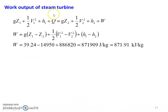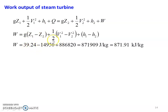Work output from the steam turbine using the steady flow energy equation: g·Z1 plus 1/2·V1² plus H1 plus Q equals g·Z2 plus 1/2·V2² plus H2 plus W. Since the turbine is adiabatic, Q equals zero. Rearranging: W equals g·(Z1 minus Z2) plus 1/2·(V1² minus V2²) plus (H1 minus H2). Substituting: W equals 39.24 plus (minus 14950) plus 886820, equal to 871910 joules per kilogram, or 871.91 kilojoules per kilogram. The work output of the steam turbine is 871.91 kilojoules per kilogram.